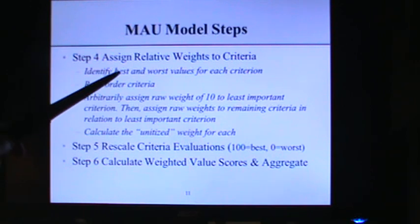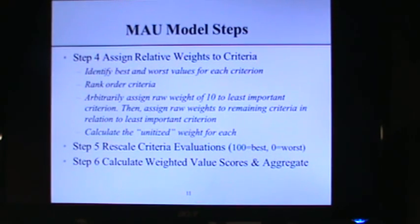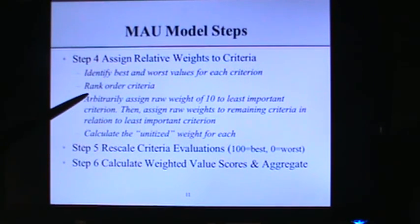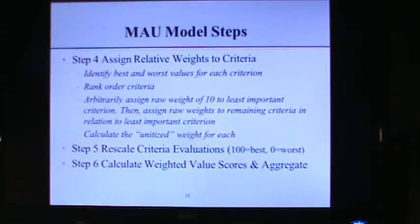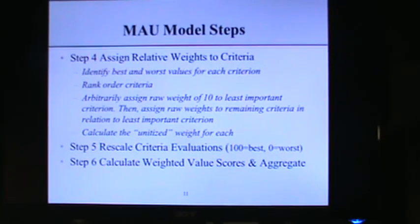Step four in more detail: for each criterion, we identify the best value and the worst value. So if a score ranges from 5 to 80, we pull out both ends to get a best-to-worst range. We also rank order the criteria — deciding which is most important, next most important, and so on. We then assign weights based on that rank order, push those weights down onto a unitized scale, rescale the criteria scores, multiply scores times weights, and get the best alternative.